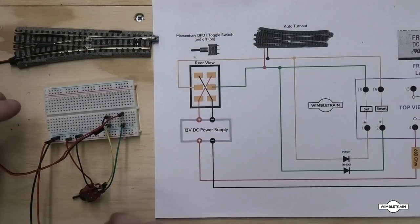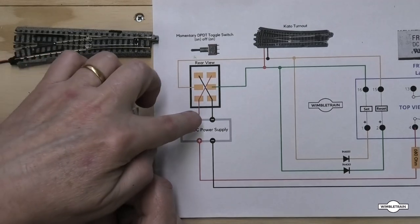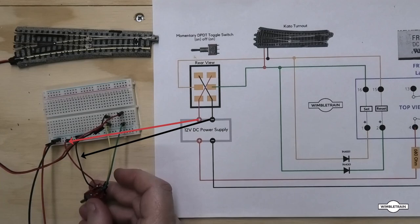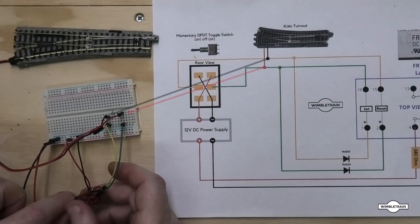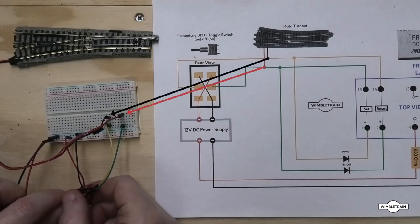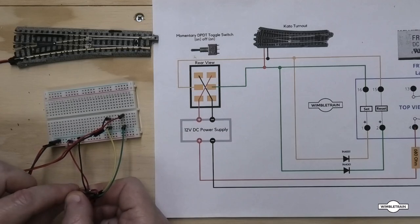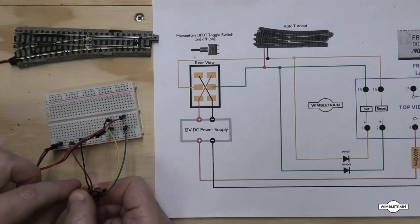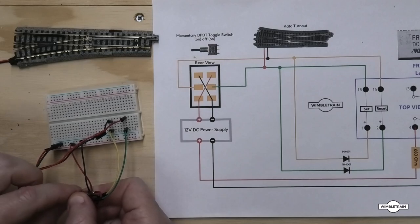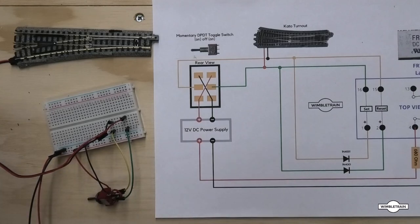Okay, so now we've got our switch connected here with the positive and negative wires as per the diagram connected to 12 volt power supply, and then just to test it out we've got the yellow and green wires as per the diagram connected to the Kato turnout. So now we can just test this on its own and make sure this works, and you can hear and see the turnout operating when I flick the toggle switch back and forth. So we know that works, so now we can continue on and connect the latching relay next.